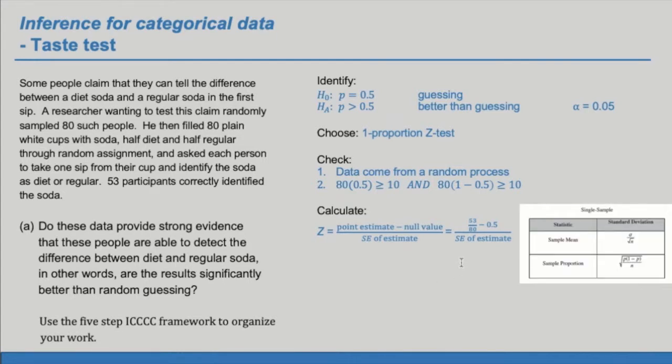So if we ever forget the structure of the standard error, we can always pull out a formula sheet. So here it is. We are doing a single proportion and standard deviation. So it would be square root of P times 1 minus P over N. And in the same way that we used the null proportion in the success-failure condition, P in the SE of the estimate would also be 0.5. So let's plug that in. Now let's evaluate the z-score and the p-value.